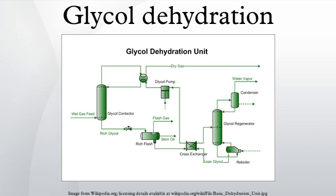Enhanced stripping methods: Most glycol units are fairly uniform except for the regeneration step. Several methods are used to enhance the stripping of the glycol to higher purities. Since the reboiler temperature is limited to 400°F or less to prevent thermal degradation of the glycol, almost all of the enhanced systems center on lowering the partial pressure of water in the system to increase stripping.